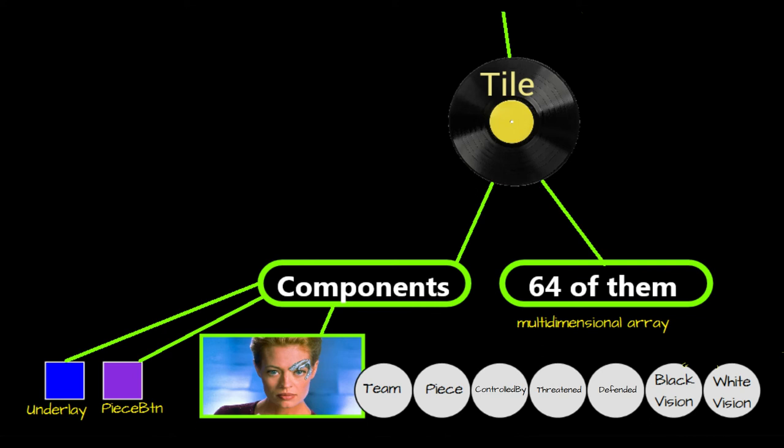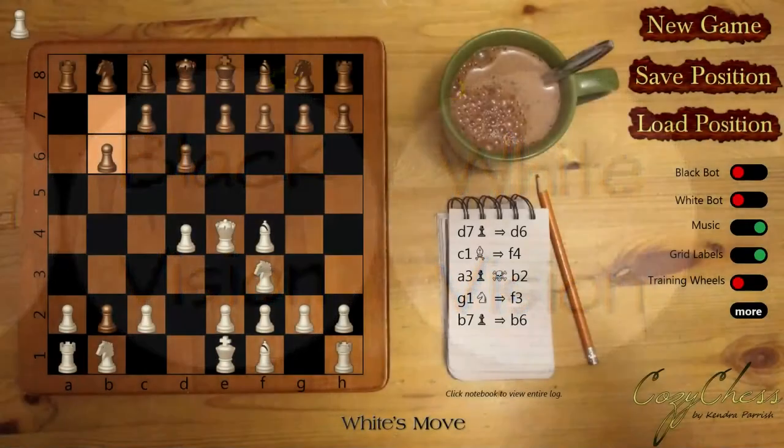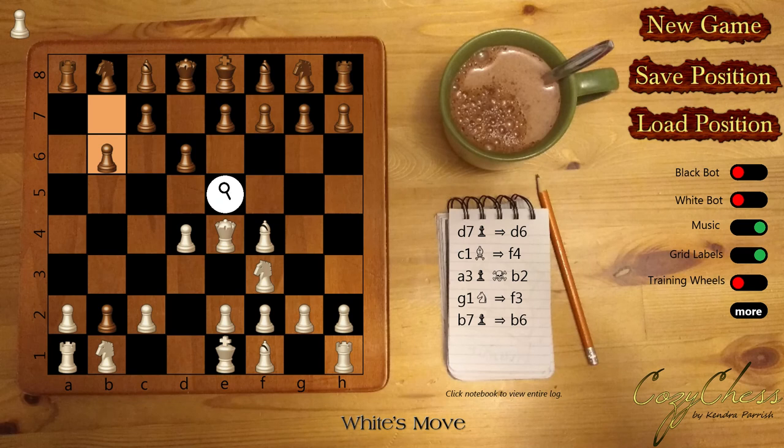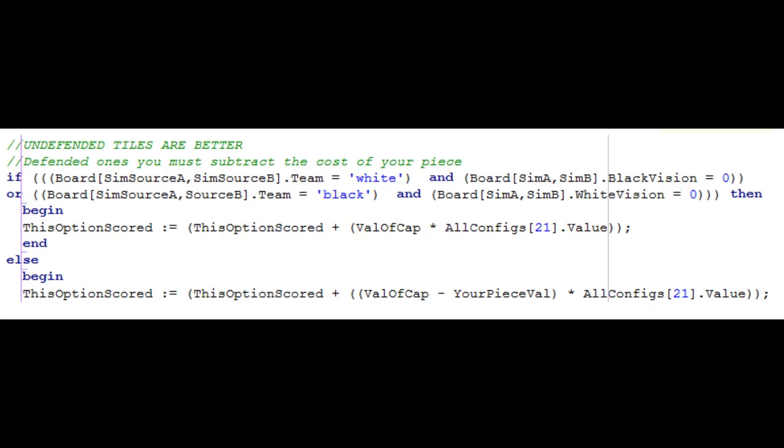Back in my definition of the tile record, I gave each tile two integers called black vision and white vision, representing how many pieces of the relevant color could hypothetically capture a piece on that tile. In this four position, this tile, e5, has a black vision of one because there is only one black piece, the pawn currently on d6, that could go there if it were occupied. It has a white vision of four because a white pawn, queen, bishop, and knight could all go there. This code, which is only run with regards to captures, states that if you are white and the tile you are going to has a black vision of zero, or if you are black and the tile that you want to go to has a white vision of zero, that is, if you can capture what is on the tile without putting your own piece in immediate risk, that's a good thing. Your assessment of this possible move should increase by val of cap, the value of the piece you are capturing, 3 for a bishop, 5 for a rook, etc., multiplied by a configurable parameter, more about those in a bit, which by default is set to 5.